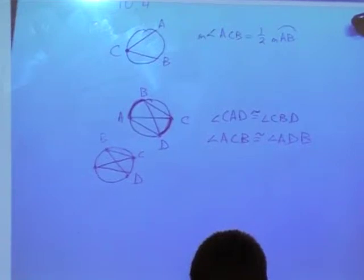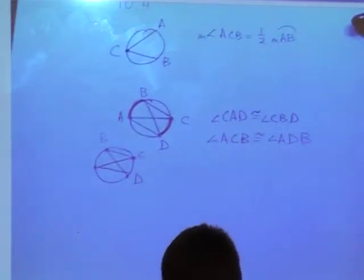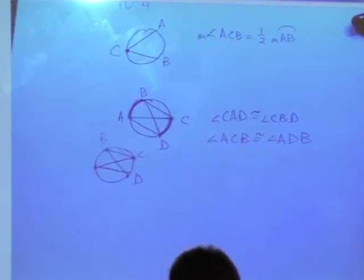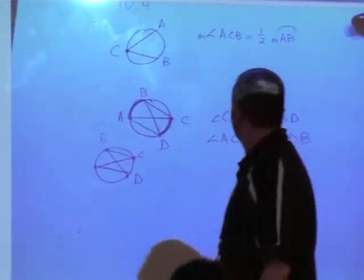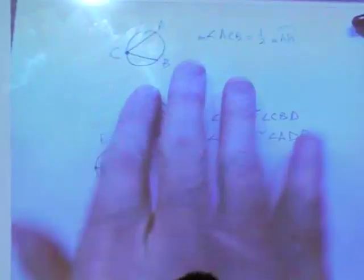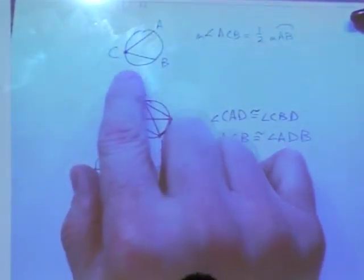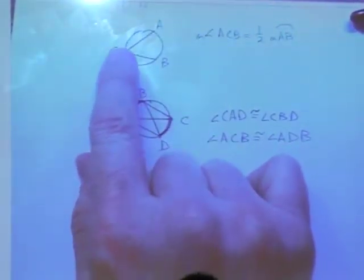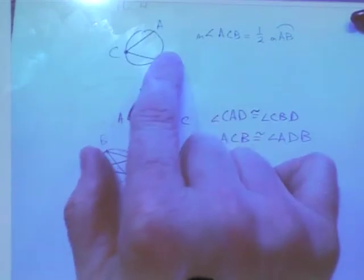Another question? Everybody else thought this was easy? No other questions about 10-4. Because 10-4 leads into 10-5. This is the first part. So I want you to notice something on this one. You have the intersection is on the circle. That's important.